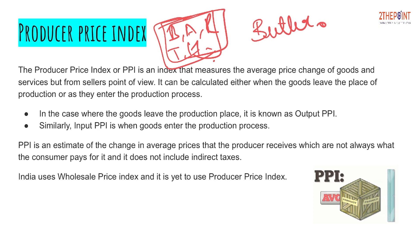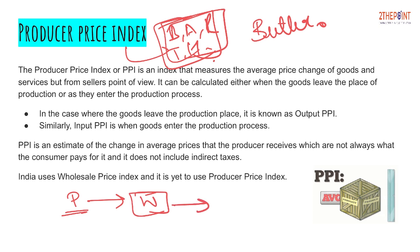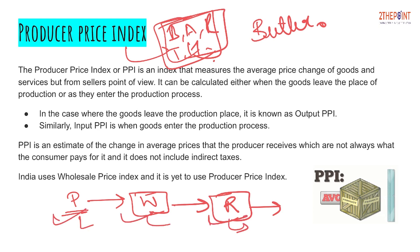Now, what is the Producer Price Index? Let's assume there are three stages in the supply chain. First is the producer, who produces the goods and sells them to the wholesaler. The wholesaler purchases goods from the producer in bulk and then sells to the retailer, who then sells the good to the consumer — like you and me. So there are three people in the supply chain: the producer, the wholesaler, and the retailer.